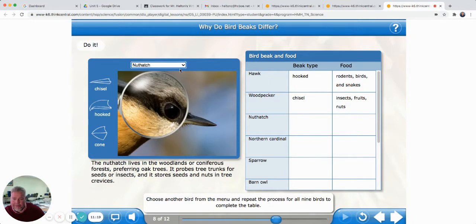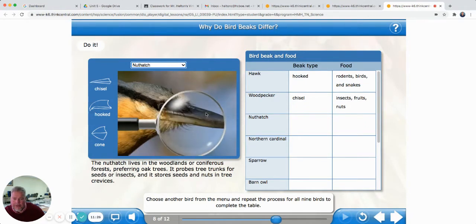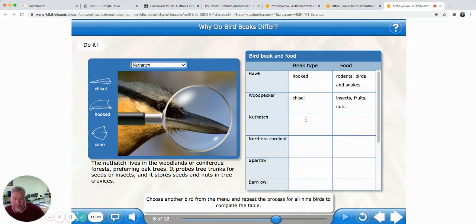Nuthatch. Never heard of a nuthatch. What do you think about this one? I think it's more of a chisel too, don't you? It's not quite that cone shape. It's more of a chisel. It lives in the woodlands or coniferous forest, preferring oak trees. It probes tree trunks for seeds, insects, and it stores seeds and nuts in the tree crevices. So, nuts.